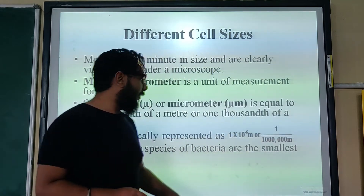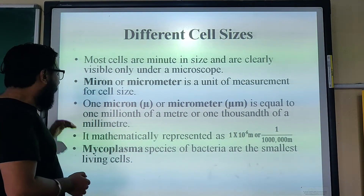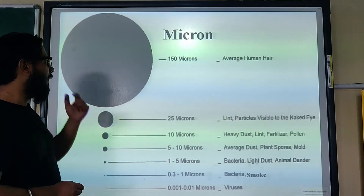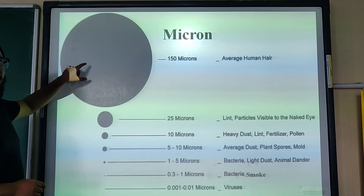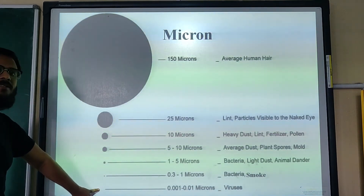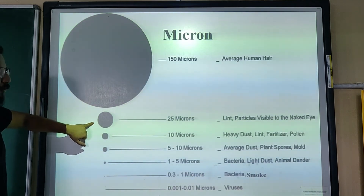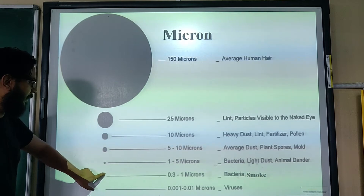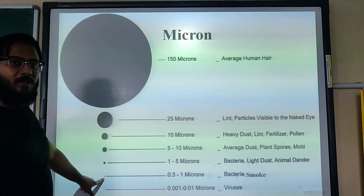For general knowledge, Mycoplasma is a species of bacteria known as the smallest organism on the planet. Here is a visual representation of how big a micron is. The diagram shows a hair follicle diameter at 125 microns, compared to a cell at 10 microns. So if that is the size of a hair, the cell would be much smaller in comparison.